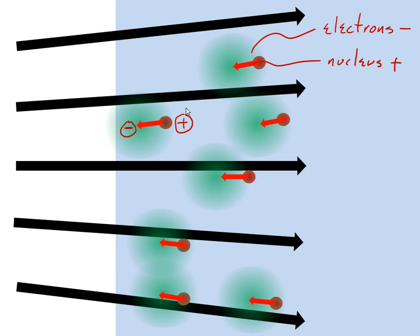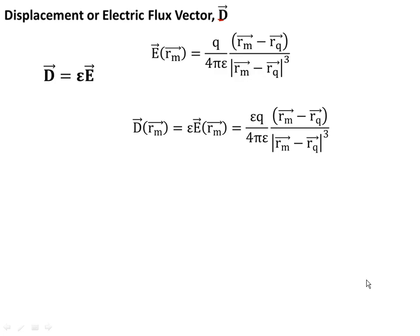We know that's going to create an electric field that pushes against the electric field that came in. So in a lot of materials, you get a shifting of the charges within the atoms or molecules that create an electric field countering the applied field. By superposition, when we have two opposing electric fields, the overall electric field is the sum of those. So we would expect the electric field inside the material, E sub M, to be less than the electric field in free space, E sub S, because this material pushes back.